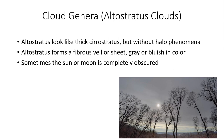Moving to altostratus clouds: they look like thick cirrostratus but do not allow for the halo phenomenon. If you see a sheet-like cloud fairly high off the ground and the sun or moon faintly shines through — like a ground glass effect — but there's no halo, that's a good indicator you're looking at altostratus, not cirrostratus. Altostratus form a fibrous veil or sheet, gray or sometimes bluish in color. Sometimes the sun or moon is completely obscured. Altostratus are thicker and lower than cirrostratus and usually obscure the sun or moon. The example in the lower right image shows the sun faintly visible through the altostratus cloud deck.